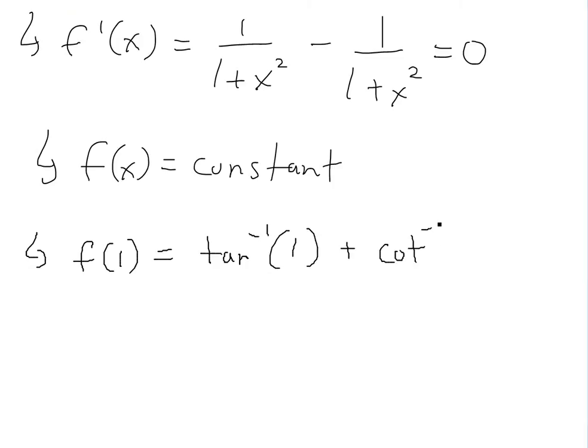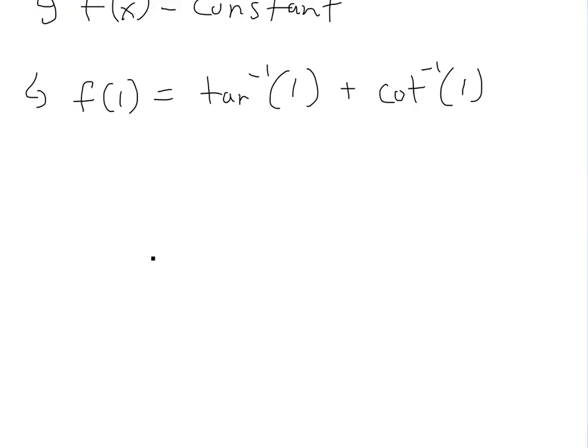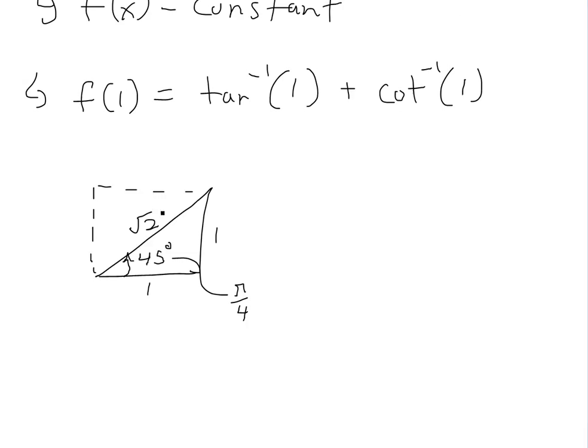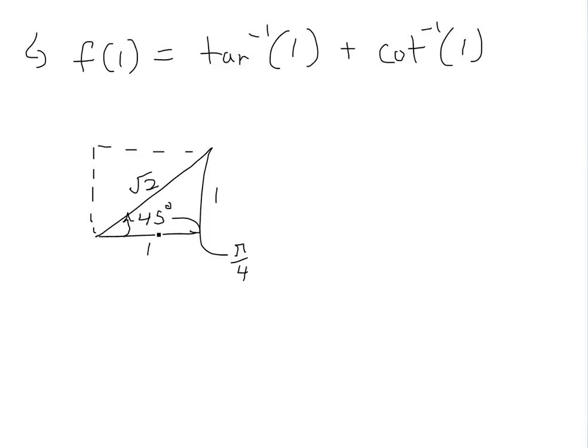We plug this in: arctan(1) plus arccot(1). Like I showed in my earlier video on exact trigonometric ratios, if you were to draw a triangle like this, basically if this is a 45 degrees angle—this is half of a box here—this is 45 degrees, which in radians equals π/4. Let's say it's a box of size 1, 1, and then this is going to be √2 using Pythagoras theorem.